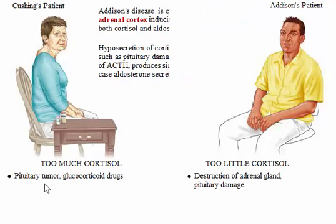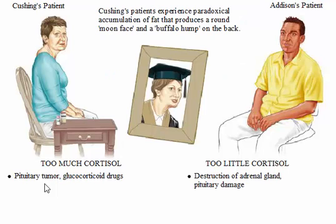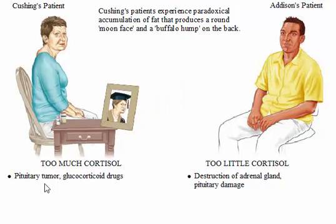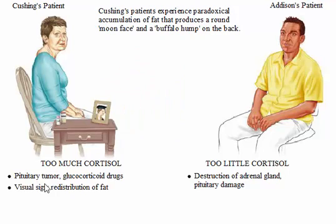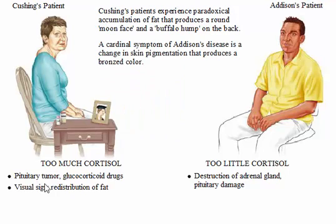Cushing's patients experience paradoxical accumulation of fat that produces a round moon face and a buffalo hump on the back. A cardinal symptom of Addison's disease is a change in skin pigmentation that produces a bronzed color.